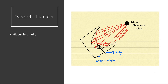Now let's look at the types of shockwave generator. The oldest type is the electrohydraulic lithotripsy, or EHL. This device has a spark source which generates a shockwave that is focused by an ellipsoidal reflector, as you can see in the picture. The key property of an ellipsoidal reflector is that it has two focal points: the F1 focal point, where the spark is generated, and the F2 focal point, which will be our stone.